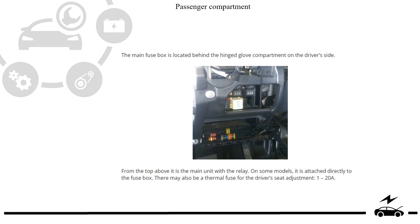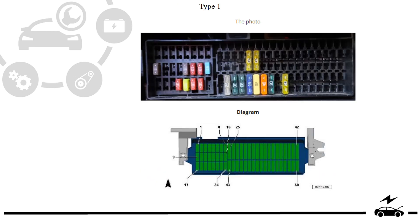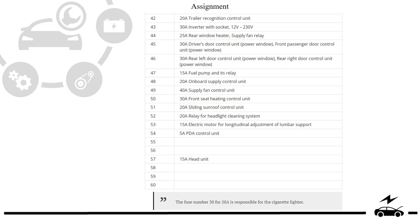Passenger compartment fuse box location, photo. Type 1: photo, diagram, assignment.